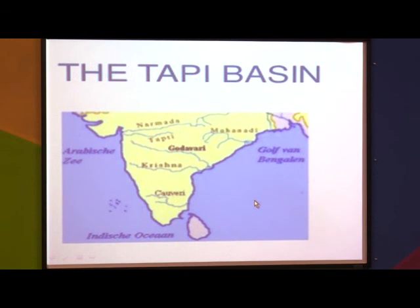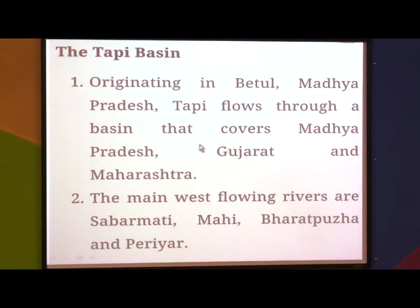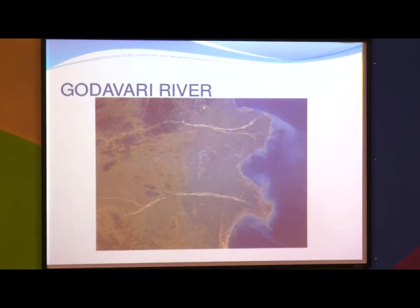The Tapi River also originates in Madhya Pradesh in the Betul district. It runs parallel to the Narmada River, flowing in the same westward direction to the south of Narmada. It also drains into the Arabian Sea. The length of the Tapi River is 724 km. It flows through Madhya Pradesh, Gujarat, and Maharashtra. Other western-flowing rivers include Sabarmati, Mahi, Bharatpuzha, and Periyar.